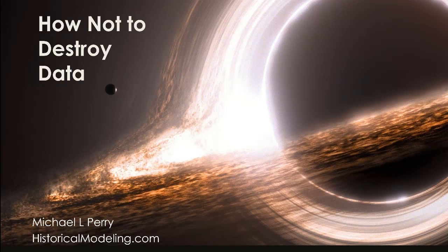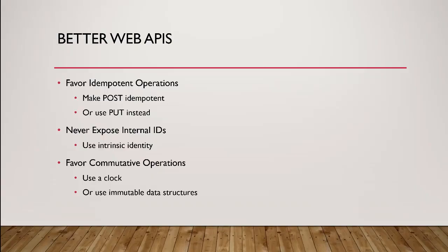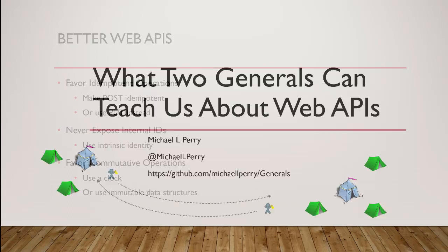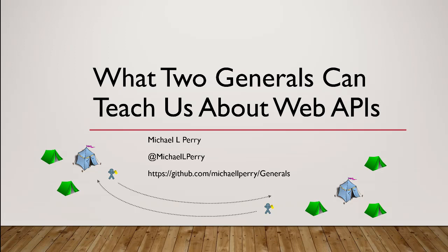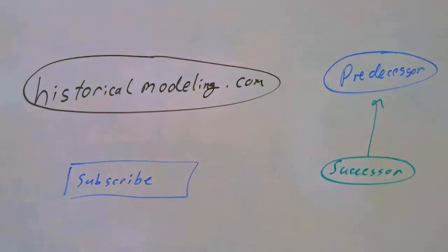To go into more detail about the patterns we talked about and how to implement them within a database, you can see last year's talk on 'how not to destroy data' — I've got a recording at historicalmodeling.com, and this talk will also go up there so you can watch both back to back. So in order to create better web APIs: favor idempotent operations, never expose your internal IDs, use intrinsic IDs instead, and favor commutative operations. Thank you very much.